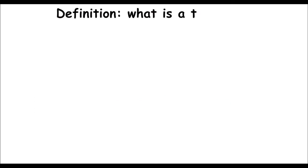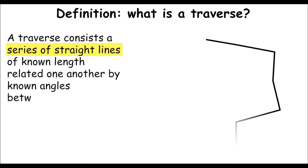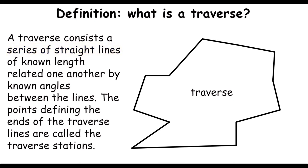So what's a traverse? A traverse consists of a series of straight lines of known length related one another by known angles between the lines. Remember, straight lines - there must not be any curved lines.